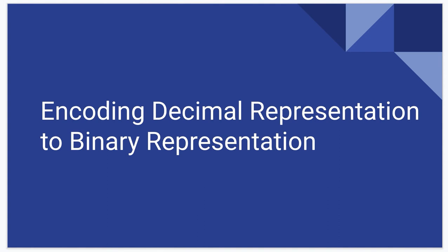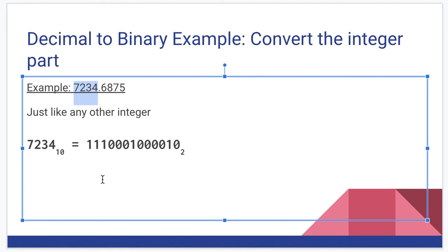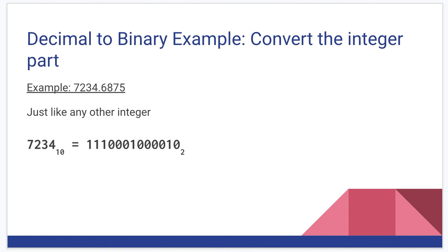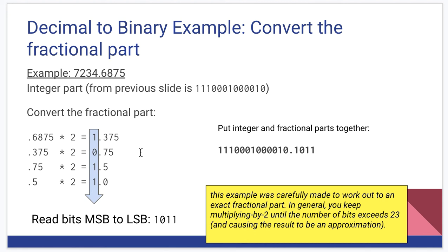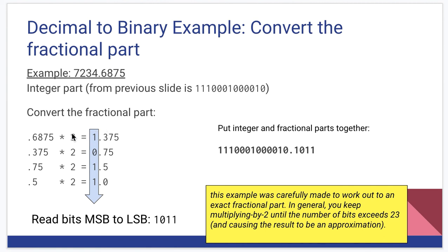All right, let's go the other way. So we have a decimal representation with things that might be after the decimal point as well. Let's convert that to binary. And again, we're going to start with an example. Here's 7234.6875. The first thing we do is convert this part. And we're going to do it just like any other integer. And hopefully you know how to do that by now. So, and I'm just going to do without proof that 7234 is 1110001000010.